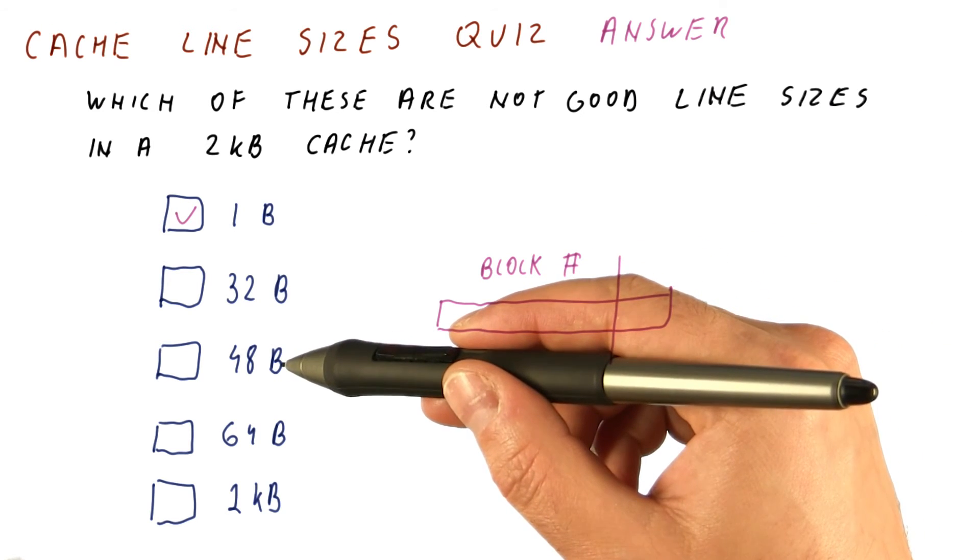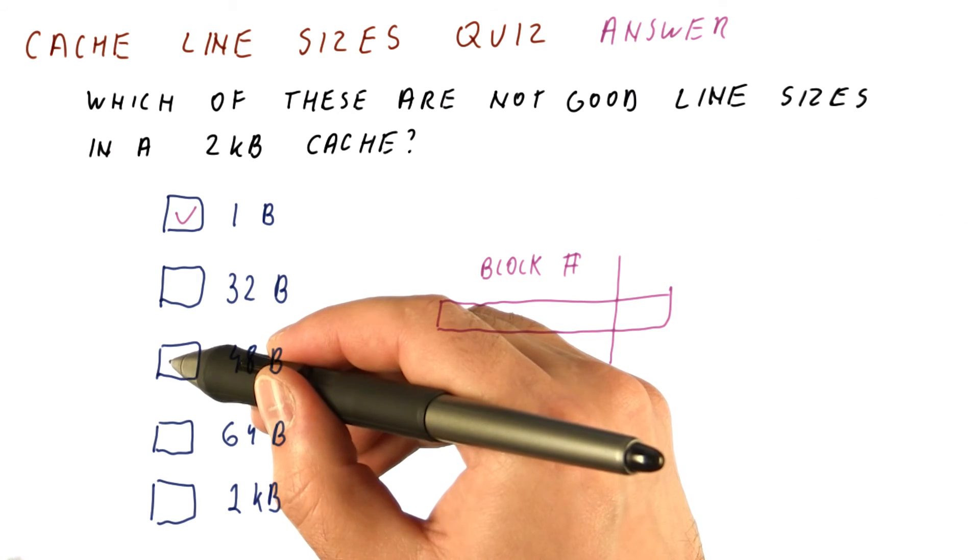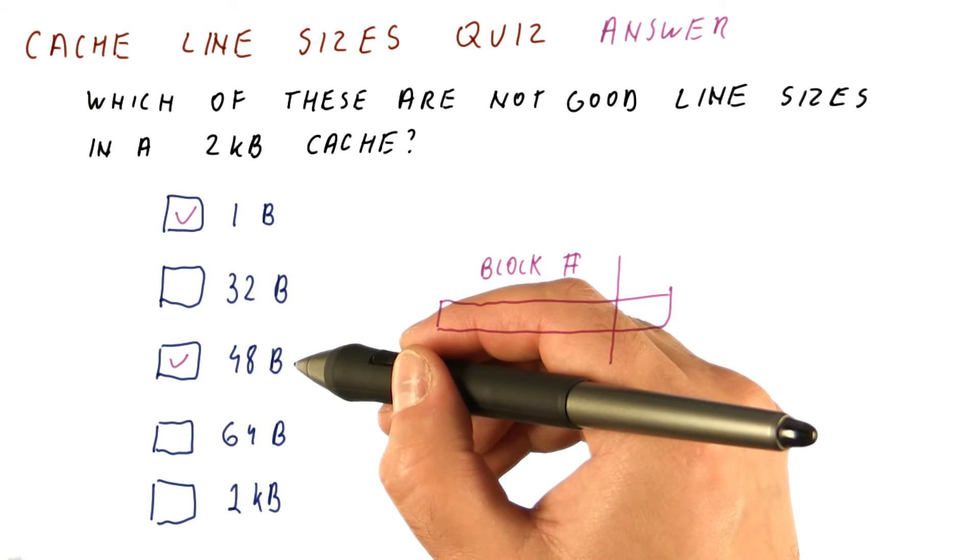In contrast, dividing by 48 bytes would actually need to be a division by 48. So this is not a good line size.